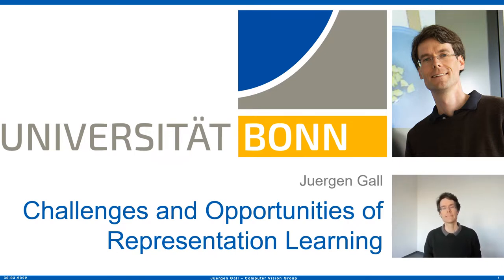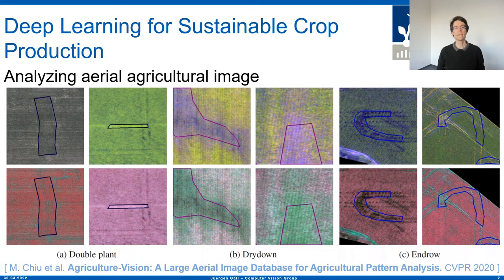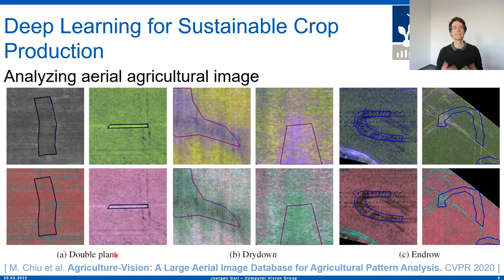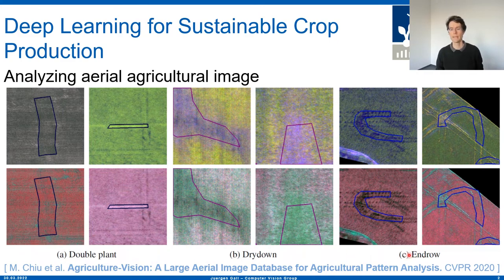The connection between representation learning and crop production is actually deep learning. Deep learning is used for many applications which are relevant for crop production. For instance, the Agricultural Vision dataset, which is a very large dataset, allows us to analyze and segment aerial images. They annotate images based on different classes like double plant, dry down, or the end of a row. The task is, given an aerial image, to classify and segment the different patterns.